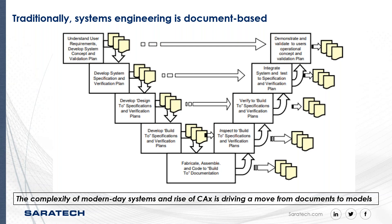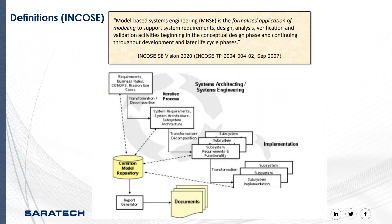In the past, when people implemented systems engineering processes, that V model was all document-based. User requirements captured in text, system specs in text, designs in text — all this documentation moved around to communicate the state of the system. Over time, the complexity of modern systems with computer-driven devices, and the rise of computer-aided engineering, drawing, drafting, and manufacturing, is driving a move from document to model. That's where INCOSE — the International Council on Systems Engineering — has defined model-based systems engineering as the formalized application of modeling to support the systems engineering process.